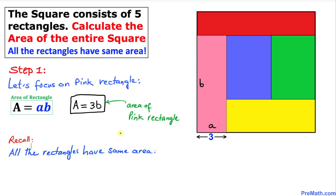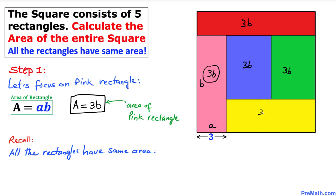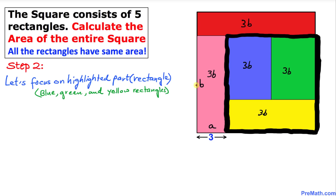We also know that all these rectangles have the same area. We know the area of this pink rectangle is 3b, which means all these rectangles are going to have area 3b. Just keep that in mind.